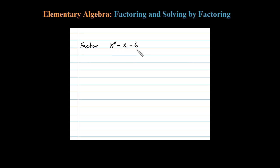Here we're asked to factor a trinomial. Since the leading coefficient is 1, we're looking for the factors of 6 that add up to negative 1. 6 is 1 times 6 or 2 times 3, so certainly we can get a negative 1 out of a 2 and 3.